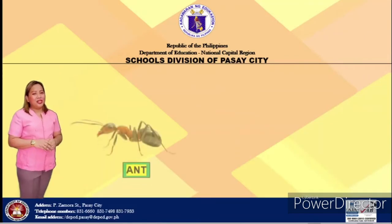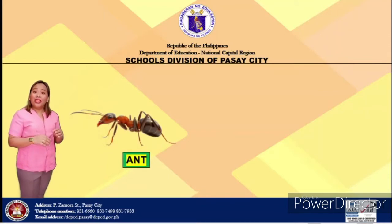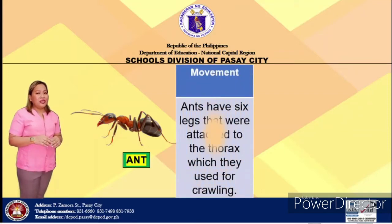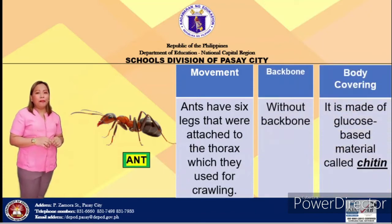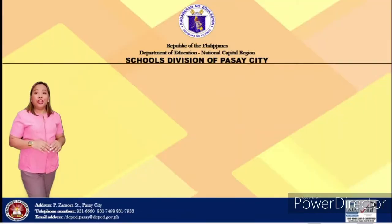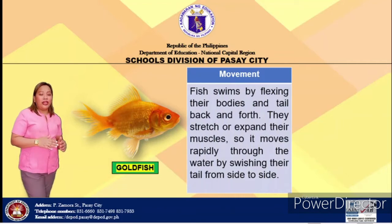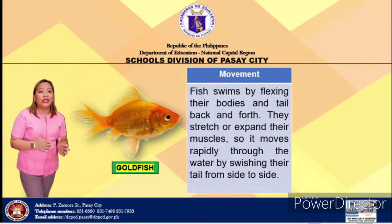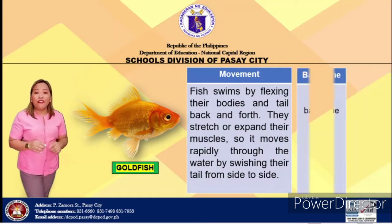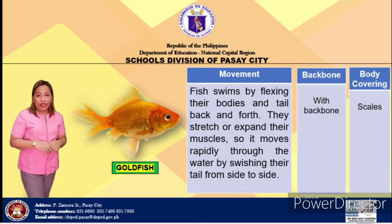How about ants? Do you know how they move? Do they have backbone? And what is their body covering? Ants have six legs that are attached to the thorax, which they use for crawling. They don't have backbone, and their body covering is made up of a glucose-based material called chitin.